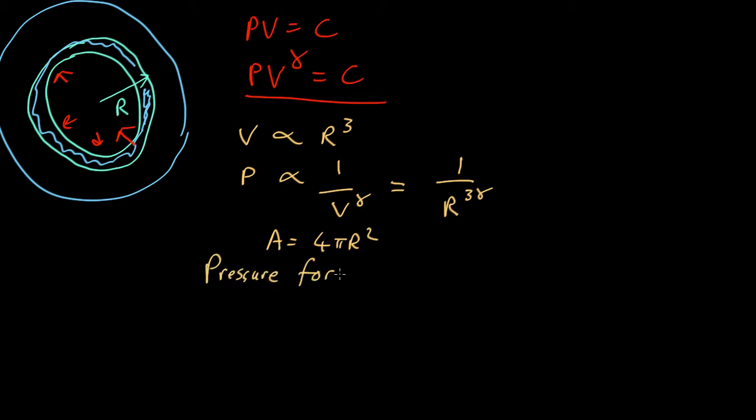So pressure force is going to be pressure times area. That's the definition of pressure. It's a force per unit area. So it's going to be this times that, R squared. I'm going to write that instead of 1 over R to 3 gamma, I'm going to write it as R to the minus 3 gamma, which is the same thing. So it's going to be proportional to R to the 2 minus 3 gamma.